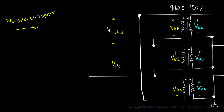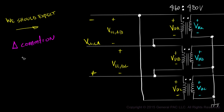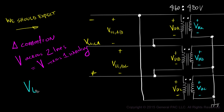Similarly, the line-to-line voltage across line B and line C is equal to phase B voltage, and the line-to-line voltage across line C and line A is equal to phase C voltage. So for a Δ-connected transformer, we should expect the voltage across two lines to equal the voltage across a single winding — in other words, the line-to-line voltage equals the phase voltage.